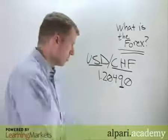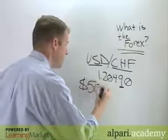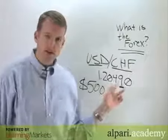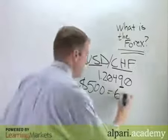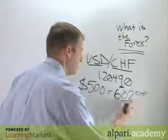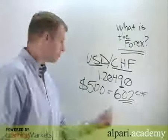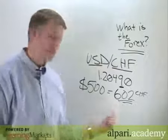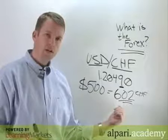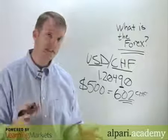If we were to convert some spending money — let's say $500 worth of spending money into francs at this particular exchange rate — that's going to give us 602 francs. So now we've done our first foreign exchange transaction. If you've ever traveled abroad, this is what you've done: you've turned your domestic currency into another currency at the exchange rate. This is one half of the foreign exchange transaction.